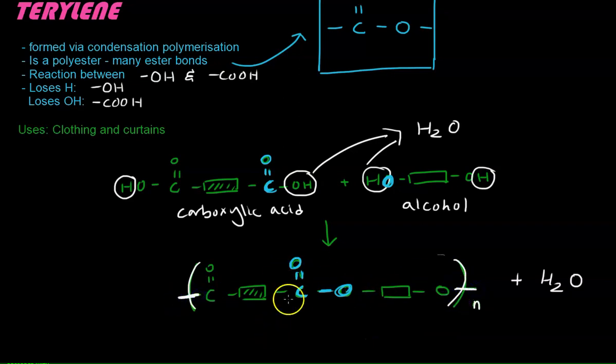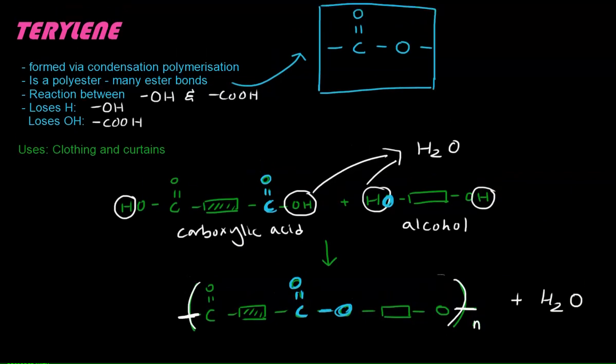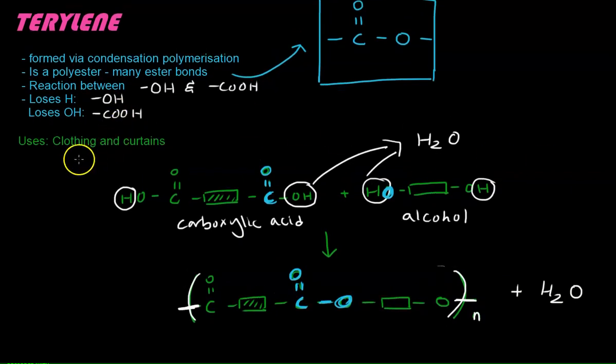Hopefully it's clear. You just have to show one amide bond and they will understand that it's a polyamide. Let's move on. Oh sorry, before that, terylene is used for clothing and curtains. This is just a very good material because it's very tough, so it's good for these two purposes.